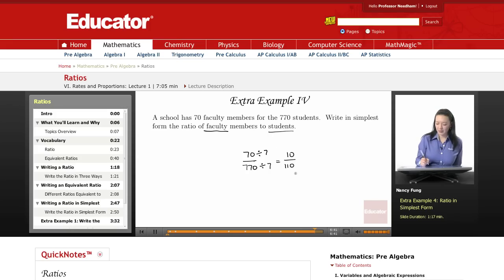Oh, but I can keep simplifying here. I see that I can simplify by 10 again, and I would get 1 over 11.